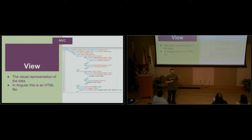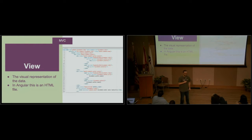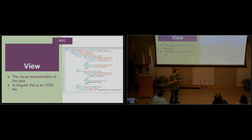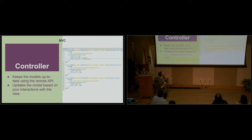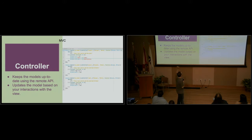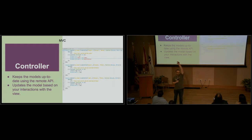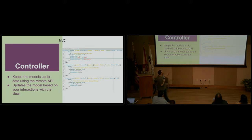Controllers. How do we know what is in the model? What is my business logic to say: how do I get stuff from the server? And how do I put it into the current model? That is my controller.